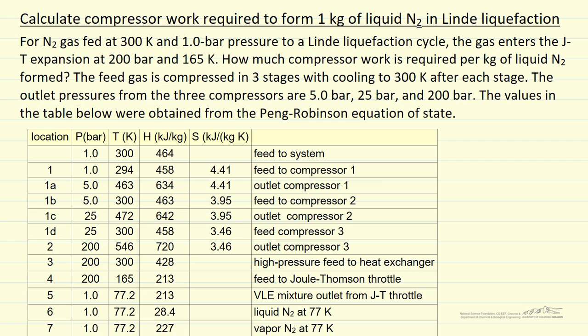Here I'm going to calculate the compressor work in order to form a kilogram of liquid nitrogen in the Linde liquefaction cycle. We're going to feed nitrogen into this process at 300 Kelvin, 1 bar, and then enter the Joule-Thomson expansion at 200 bar and 165 Kelvin. We're going to do the compression in three stages: first to 5 bar, then 25 bar, then 200 bar. In order to be practical, we can't do it in one stage.